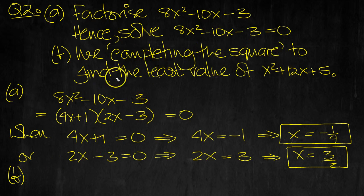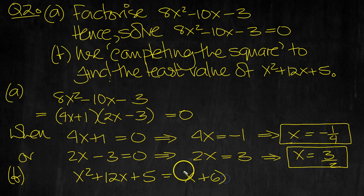Use completing the square method to find the least value of this. Half of 12 is 6, isn't it? So if we half 12, we get 6. So I'm going to write x + 6 squared. Now here we'll get the x² generated. We'll get 6x and 6x, which will give 12x. But we'll also get 36, which we don't want.